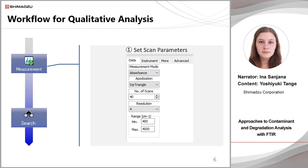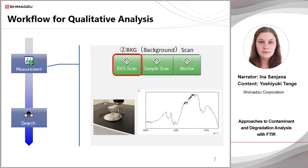Here is an example of the workflow for qualitative analysis with FTIR. First, we need to set the scan parameters, such as the measurement mode and the number of scans. Next, we perform a background scan with nothing on the prism. The energy spectrum, shown on the right, is obtained.